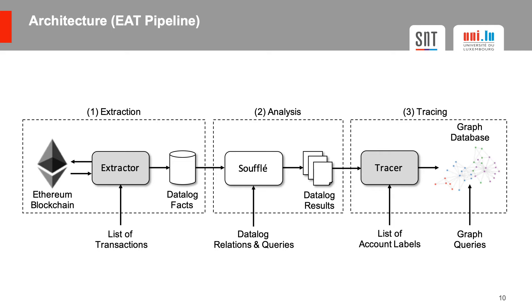The second stage is the analysis, which takes as input the datalog facts as well as a list of datalog queries and produces results about facts for which the queries match. Finally, the third stage is the tracing, which takes as input the datalog results as well as a list of account labels and produces a transaction graph. The graph can then be further queried to correlate tags or to track where stolen funds have been transferred to.